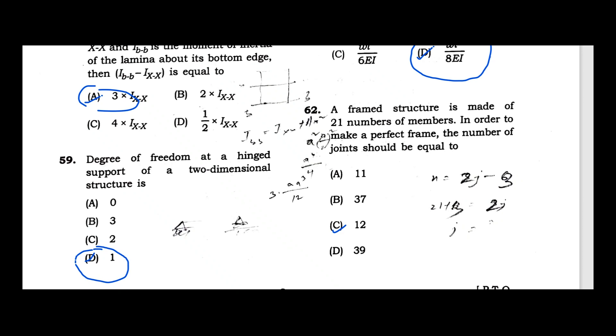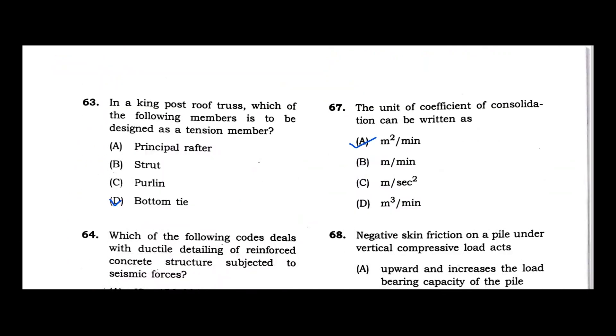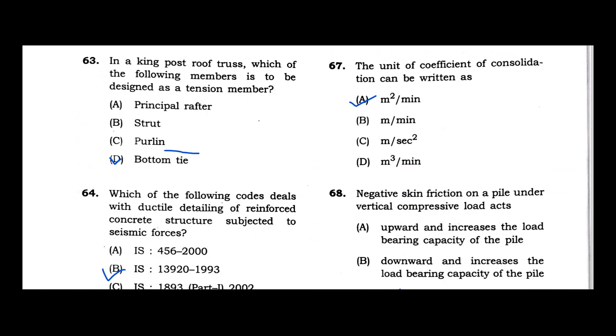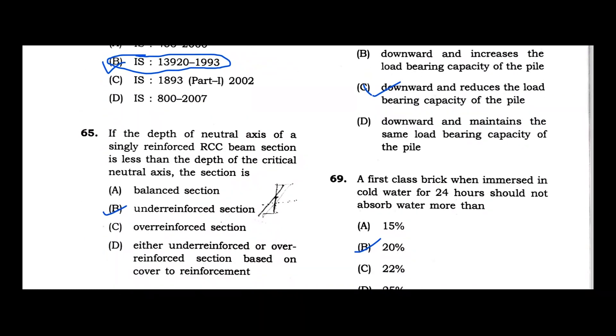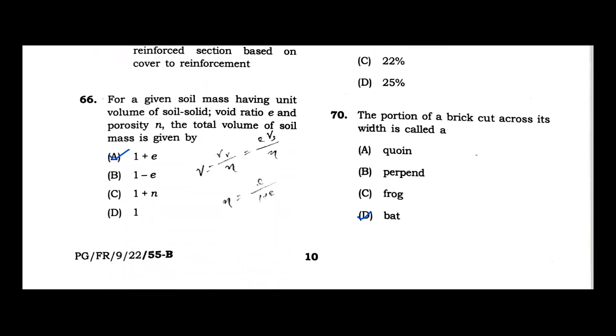Question 62: A frame structure is made of 21 members. In order to make a perfect frame, the number of joints should be equal to 12. For a perfect framework, this joint formula will get a perfect frame. Option C is correct. Question 63: In a king post roof truss, which of the following members is to be designed as a tension member? Bottom tie is used to design as a tension member. Question 64: Which code deals with ductile detailing of reinforced concrete structures for seismic forces? Ductile detailing uses IS 13920:1993.